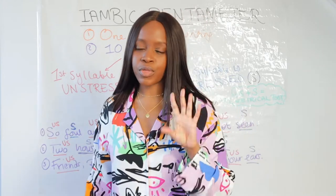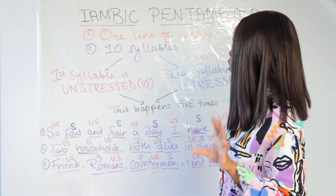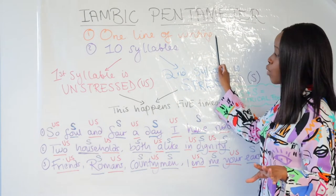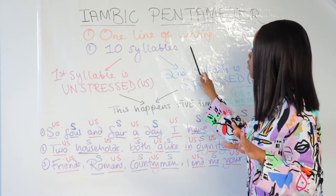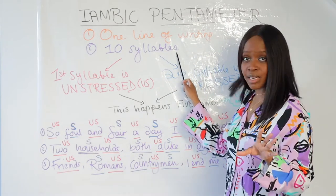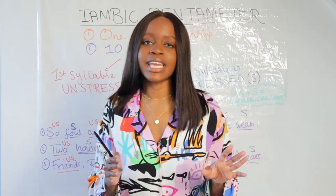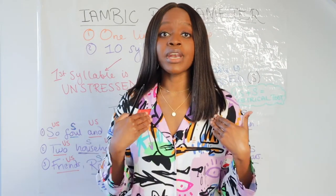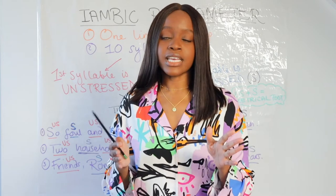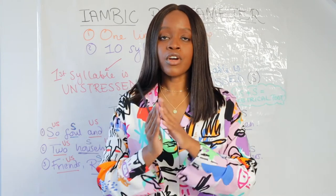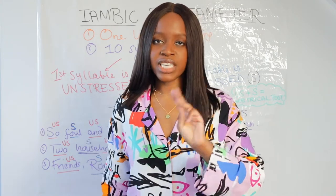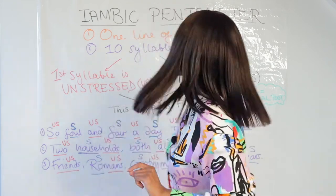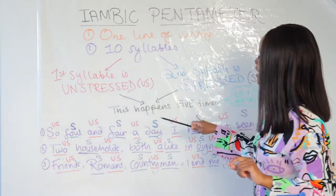Let's first start with what iambic pentameter really means. Simply put, iambic pentameter is one line of writing made up of 10 syllables. Bear in mind that syllables are basically how many claps it takes you to say a word. For example, my name is Barbara — to say 'Barbara' that's three syllables, because it takes three claps to say my name.